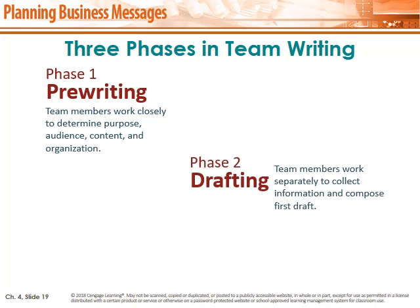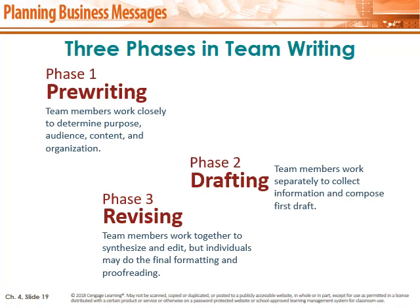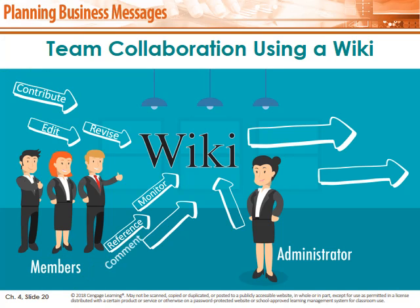Three phases in team writing. Phase one — pre-writing: team members work closely together to determine purpose, audience, content, and organization. Phase two — drafting: they work separately to collect information and compose the first draft. Phase three — revising, which is very important: the team works together to synthesize and edit, while individuals may handle final formatting and proofreading. Team collaboration using a wiki: a wiki is a platform or website that allows all team members to access all documents to write, edit, and revise together. It supports contribution, editing, revising, monitoring, reference, commands, project completion, and serves as an information storehouse.